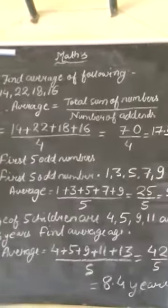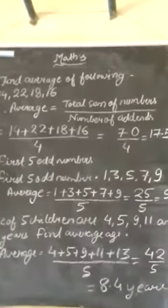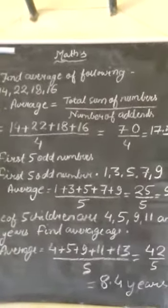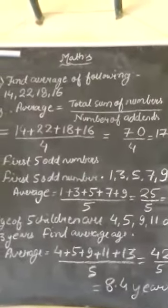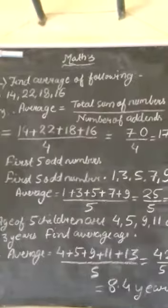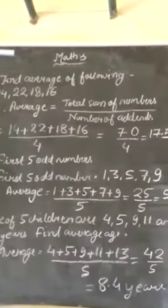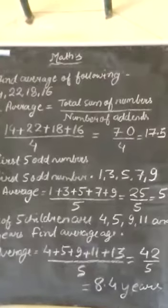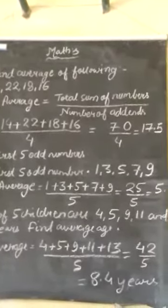Means we find the average of 14, 22, 18, 16. Means any person contributes any amount, 14 rupees, 22 rupees, 18 rupees, 16 rupees. But what is average contributions? We find the average contribution or means one person is near about contribution.